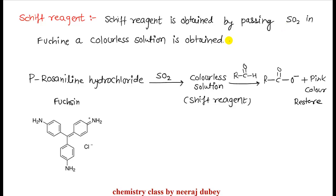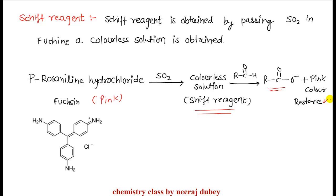Next, let's look at Schiff's reagent. Schiff's reagent is obtained by passing SO2 into fuchsin — a colorless solution is obtained. Fuchsin contains para-rosaniline hydrochloride dye. When SO2 is passed into it, the resulting reagent is Schiff's reagent. Schiff's reagent is a mild oxidizing agent that oxidizes aldehyde while retaining other groups. The solution is pink in color before passing SO2, becomes colorless after SO2, and then the pink color is restored on reaction with aldehyde — this pink color restoration is the confirmatory test of Schiff's reagent.